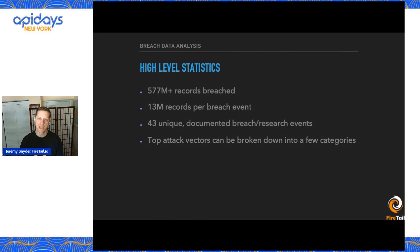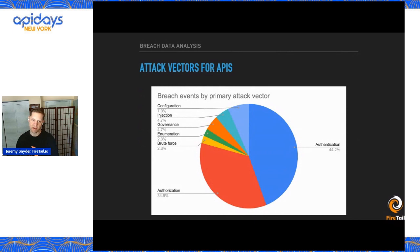You can find that report on our website at firetail.io — you'll see the banner around it. We can break down the top attack vectors into a few categories. A lot of those categories really do align to the OWASP Top 10, but there are a couple of things I want to discuss that don't quite align with the OWASP API Top 10.